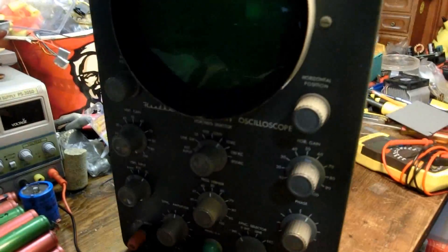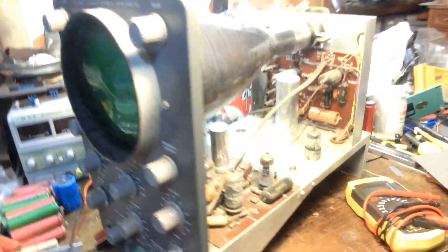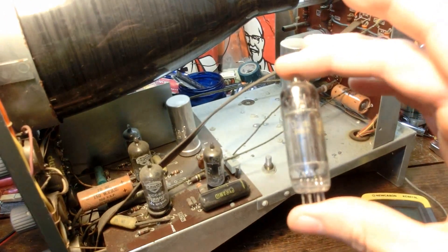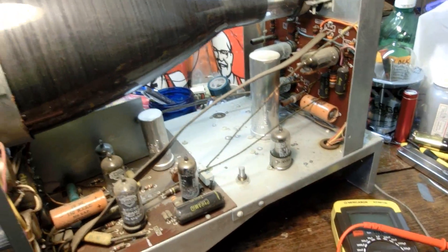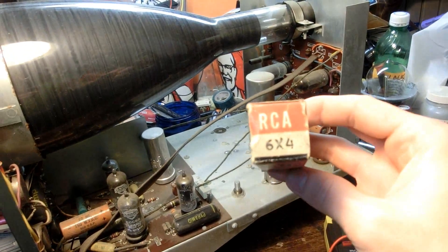So in the last video, we opened up this Heathkit O-11 oscilloscope, we turned it on, and one of the tubes blew. The tube was a 6X4 full-wave rectifying electron tube. I ordered one from eBay for $5 free shipping, and it finally came in the mail.